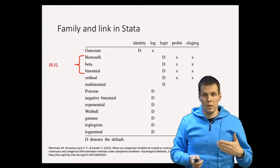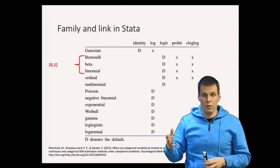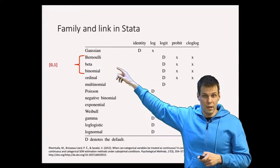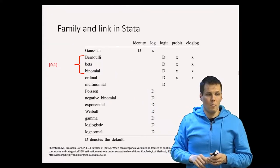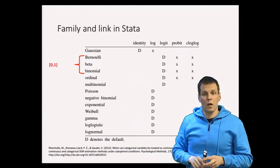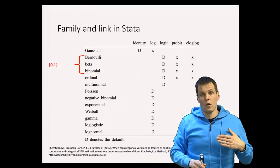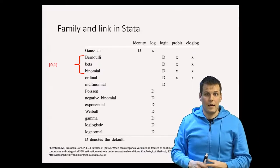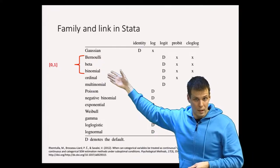Beta GLM with the beta distribution is one way to do fractional response models. There are also others that fall outside the GLM family, but it's useful to know that beta is available. Binomial is just a sum of Bernoulli distributions — if you have groups of 10 individuals and know how many committed a crime, you can apply the binomial distribution.